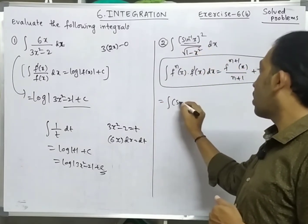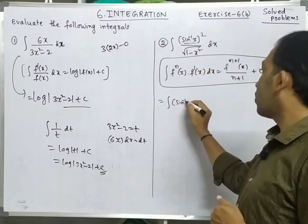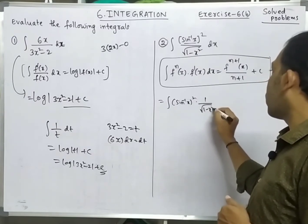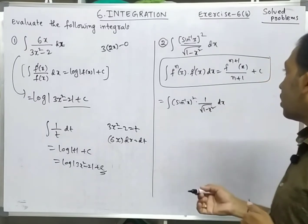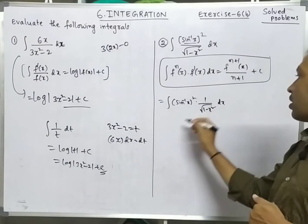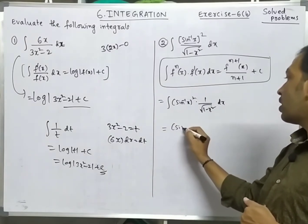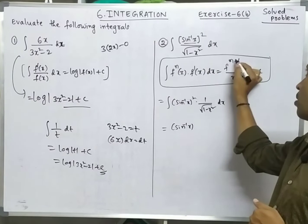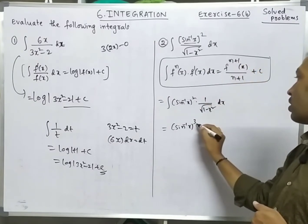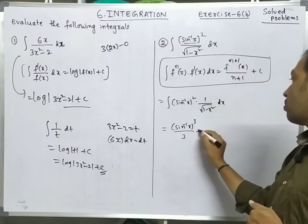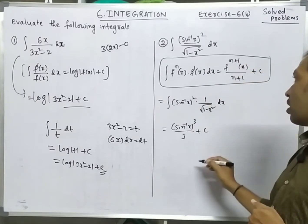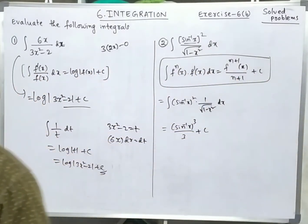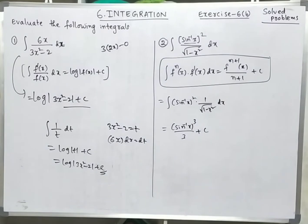Integration of (sin⁻¹x)² · (1/√(1-x²)) dx. Directly we can write it as (sin⁻¹x)^(n+1)/(n+1): n is 2, so 2+1=3, giving (sin⁻¹x)³/3 + c. Otherwise, let sin⁻¹x = t and solve by substitution method.